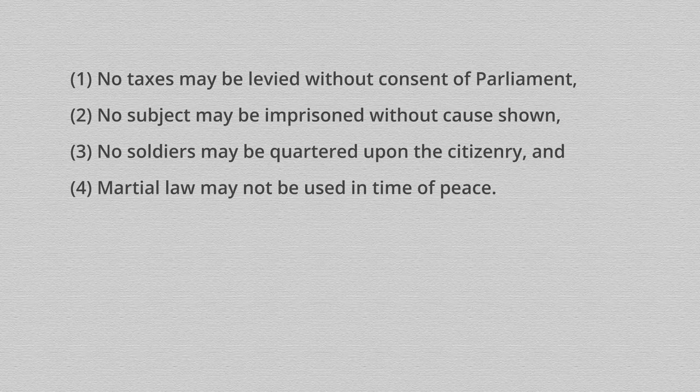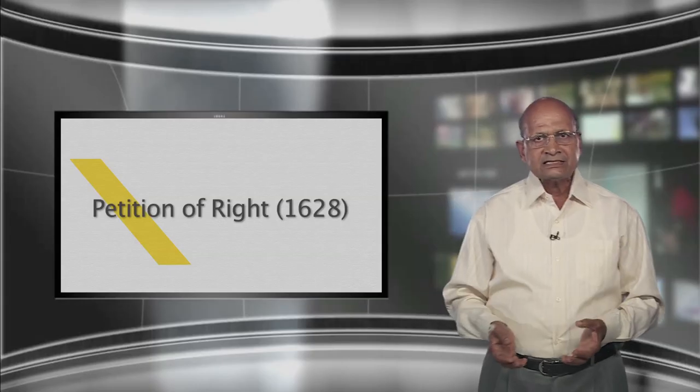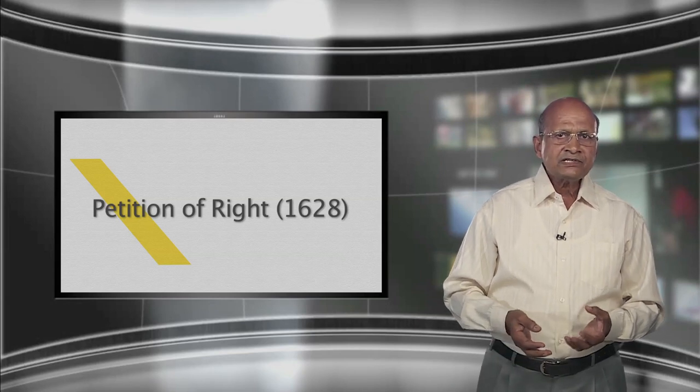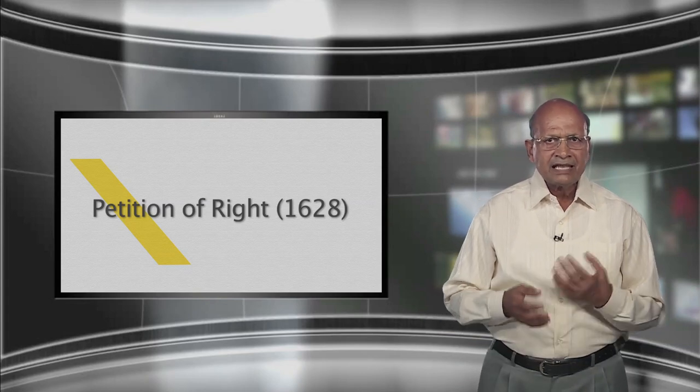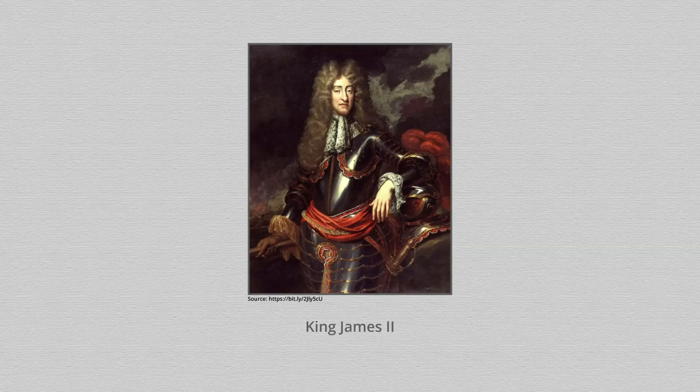The Bill of Rights 1689 in England conferred important rights upon the British Parliament and declared many actions of King James II as illegal. The American Declaration of Independence, July 4, 1776, declared: 'We hold these truths to be self-evident, that all men are created equal, that they are endowed by their creator with certain unalienable rights, that among these are life, liberty and the pursuit of happiness.'